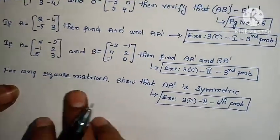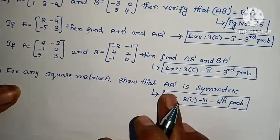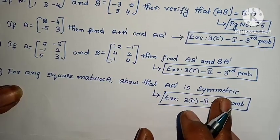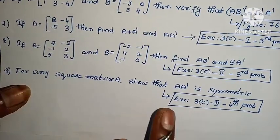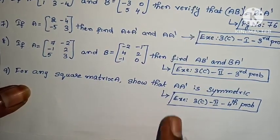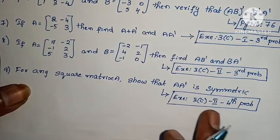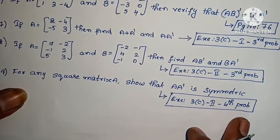Ninth one: for any square matrix A, show that A into Aᵀ is symmetric. This is a 2 marks question, but in some question papers it appears as 4 marks. Exercise 3(c), second roman, fourth problem.